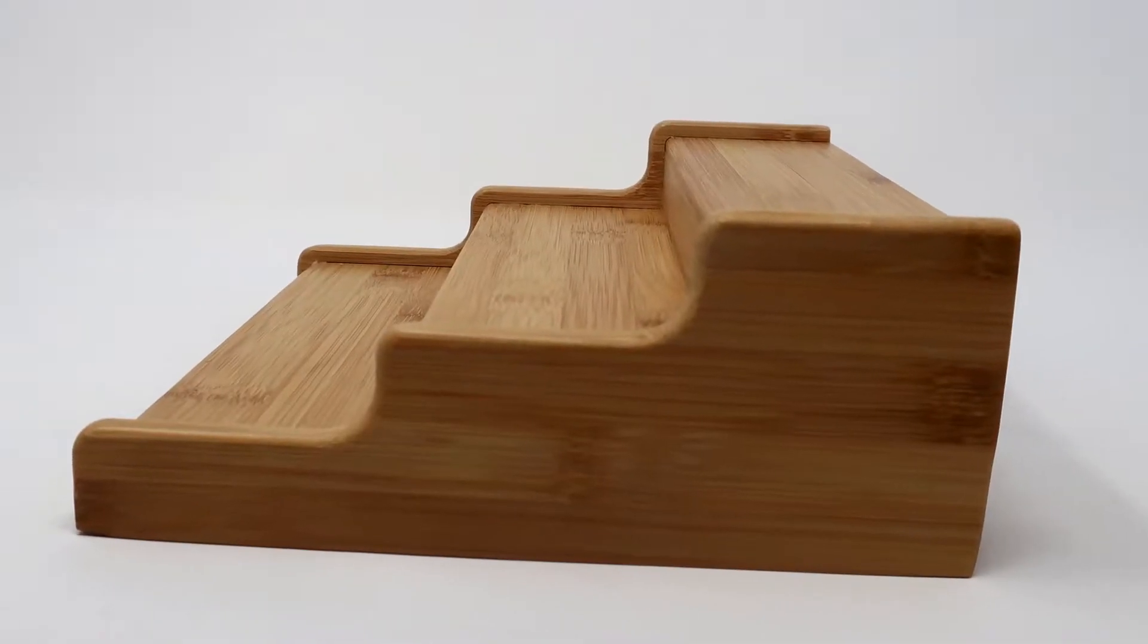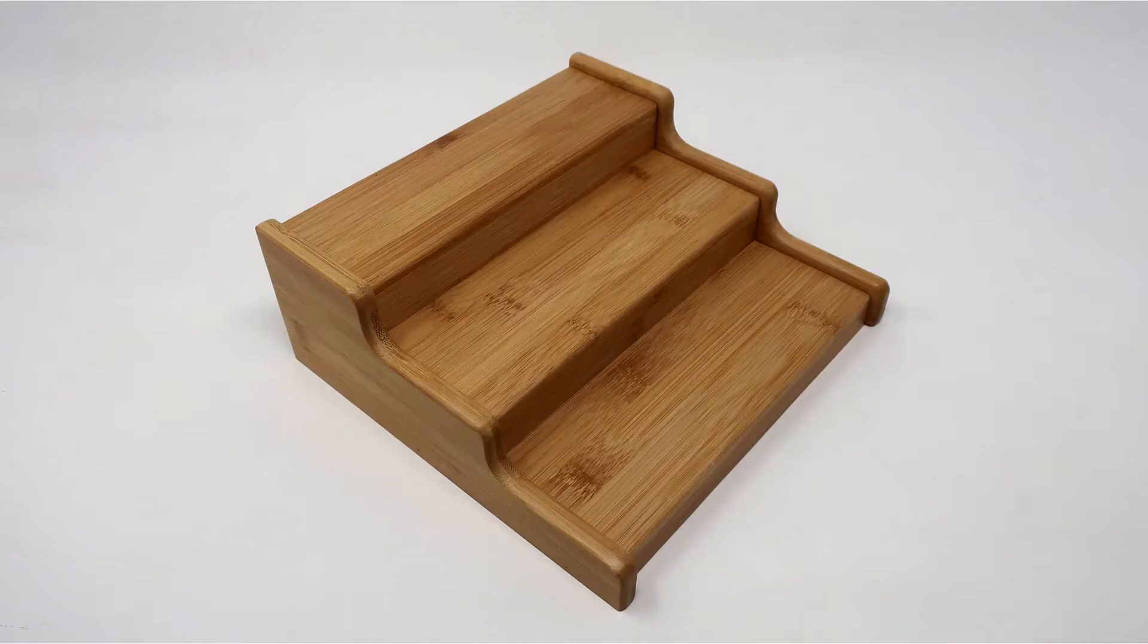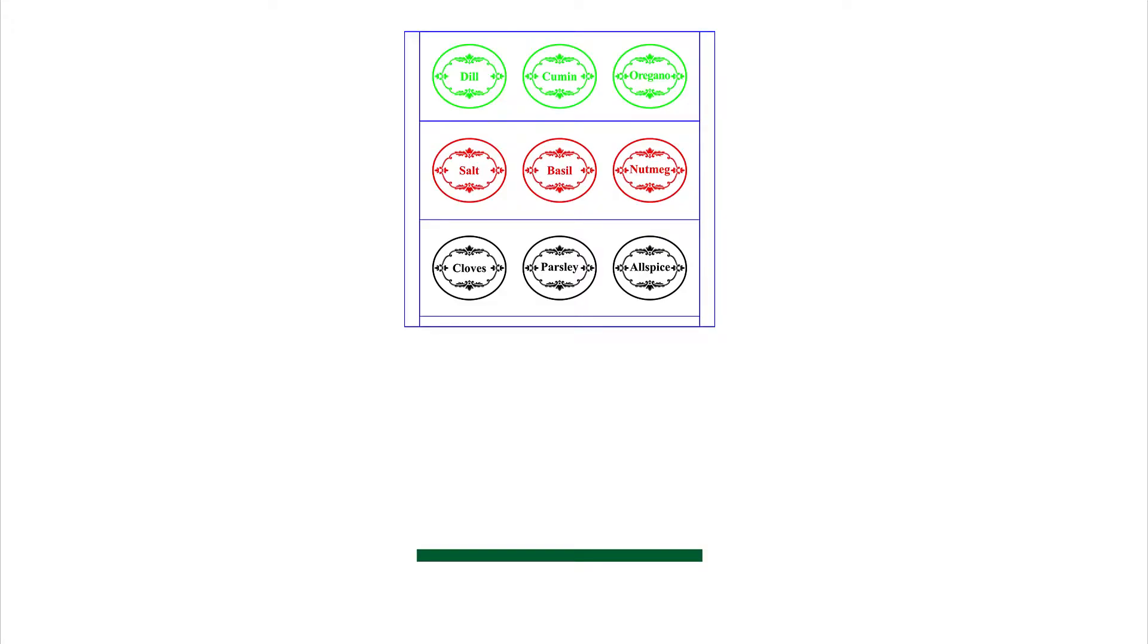In this example we will engrave onto each of the three levels of this bamboo spice rack. Design the job matching the dimensions of the application using multiple colors in the Trotec color palette. Each color will be used as a different level with a fourth dark green color designed into the file to be used as a move over color away from the main file as you see here.